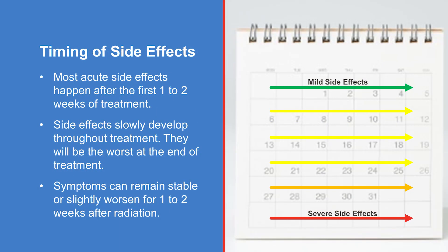Most acute side effects happen after the first one to two weeks of treatment. Side effects slowly develop as treatment goes on and will be the worst at the end. Symptoms may persist for one to two weeks after treatment before they start to improve.